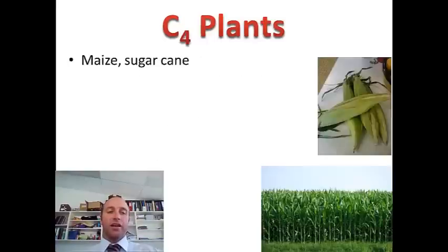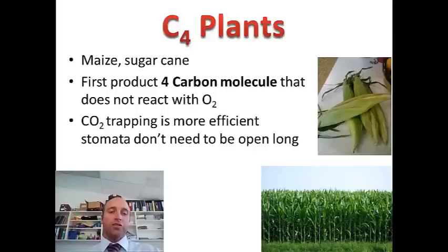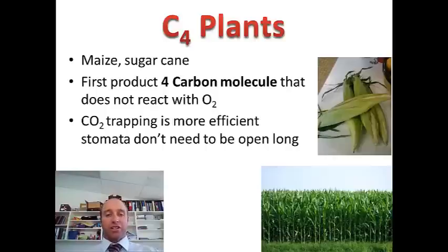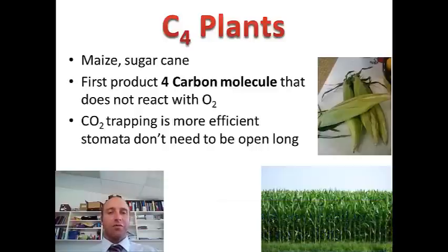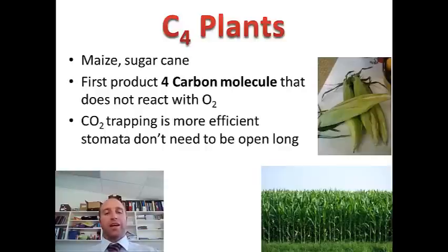Let's look at C4 plants. Two great examples are maize and sugarcane. They're called C4 plants because the first molecule is a 4-carbon molecule. The benefit here is it doesn't react with oxygen like in C3 plants, so the trapping of carbon dioxide is a lot more efficient and the stomata don't need to be open as long. In C3 plants the stomata needed to be open for a long time because the trapping of carbon dioxide wasn't too efficient, whereas C4 plants can open them for short periods by creating this 4-carbon molecule first.